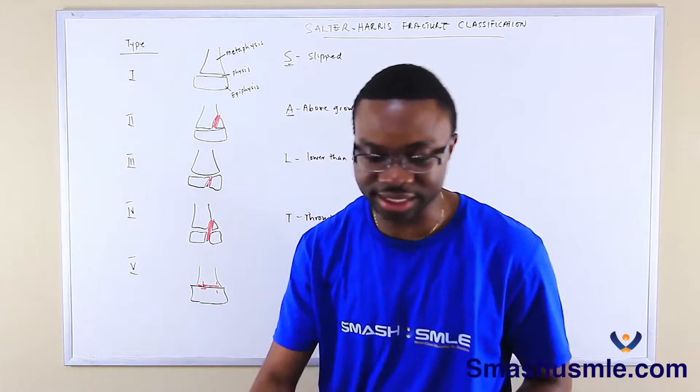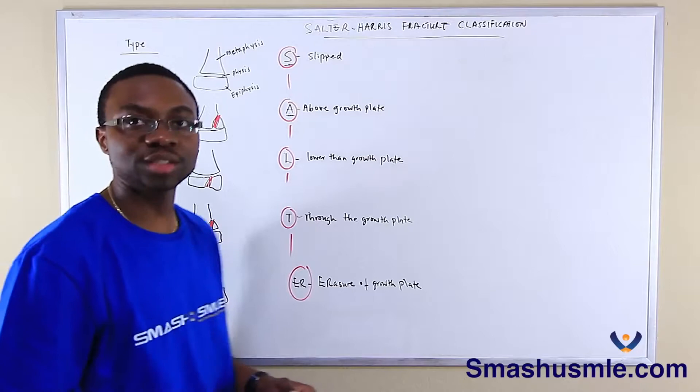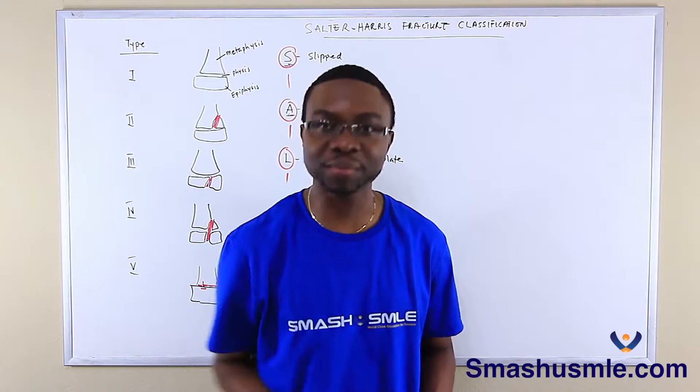The key important thing, as you can see, we just spell S-A-L-T-E-R: Salter. Type one, two, three, four, five. Very, very easy. Another easy way I do it — I just write numbers through these fractures.